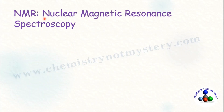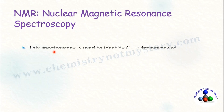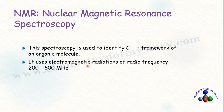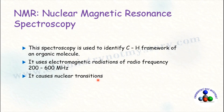NMR stands for nuclear magnetic resonance spectroscopy. This spectroscopy is used to identify the carbon-hydrogen framework of an organic molecule. It uses electromagnetic radiation of radio frequency ranging from 200 to 600 megahertz, and it causes nuclear transitions.